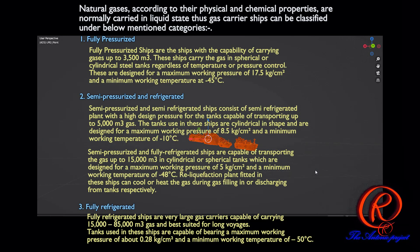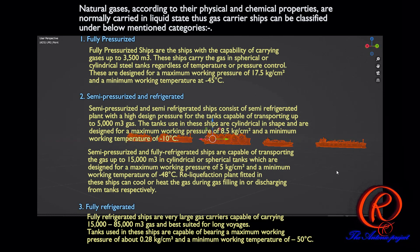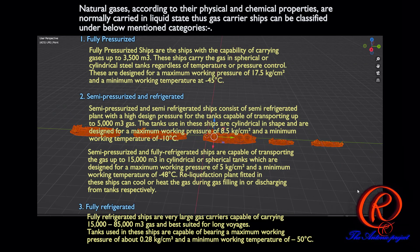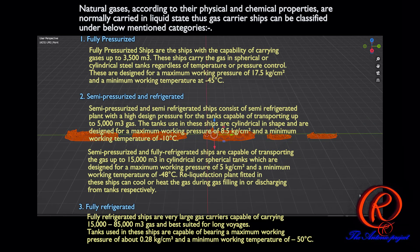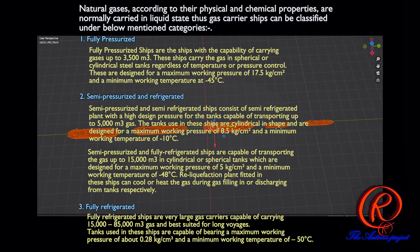Fully Pressurized and Fully Refrigerated ships are capable of transporting gas up to 15,000 cubic meters in cylindrical or spherical tanks, which are designed for a maximum working pressure of 5 kg per square centimeter and a minimum working temperature of minus 48 degrees Celsius.